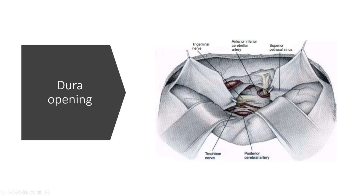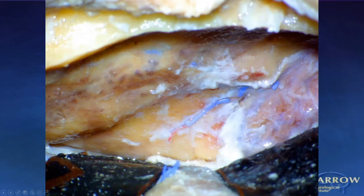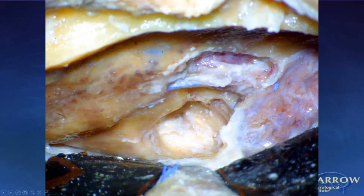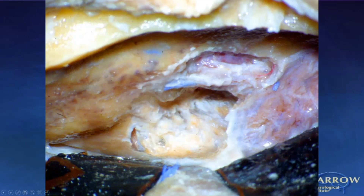Just to show the progression of the dissection — this is a left temporal bone. The middle fossa floor and the trigeminal nerve are visible. You can see the progression: the carotid, intrapetrous carotid, the GSPN, and finally the internal acoustic canal. This is the anterior petrosectomy.